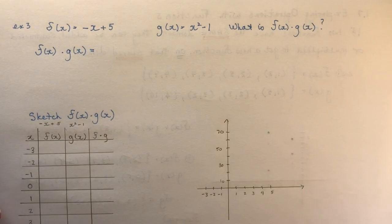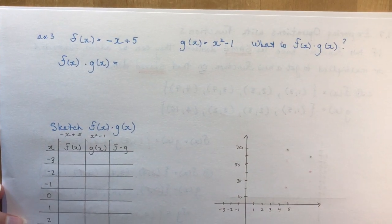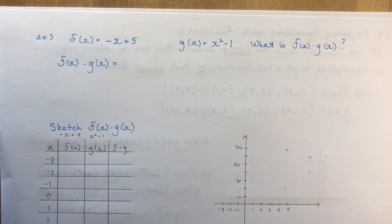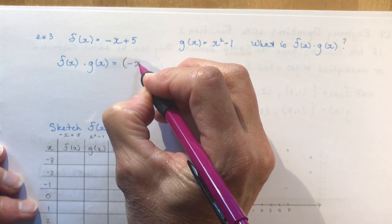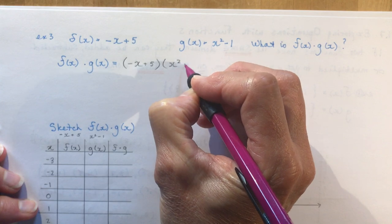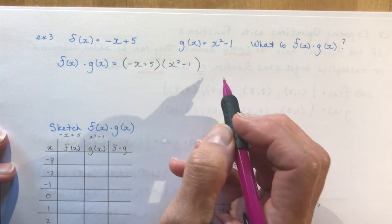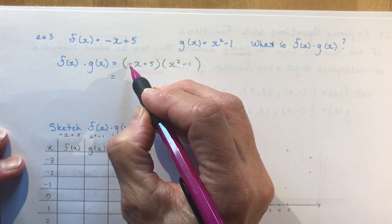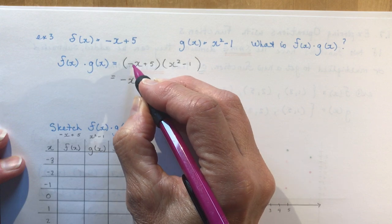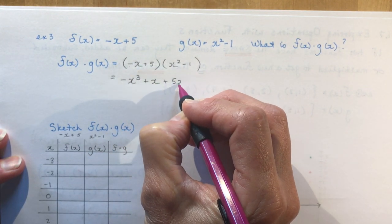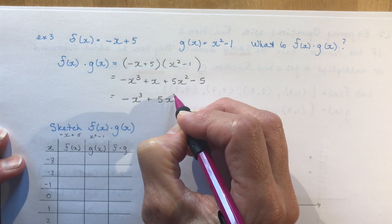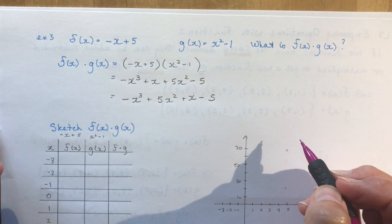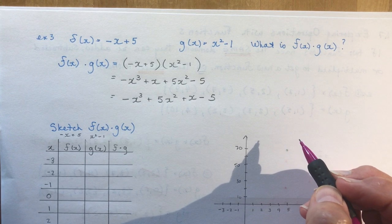Now with algebraic functions: f(x) = -x + 5 (linear) and g(x) = x² - 1 (quadratic). f(x) times g(x) = (-x + 5)(x² - 1). Expanding: -x · x² = -x³, then +x, +5x², -5. Organizing in descending order of exponents gives the product as a cubic function.